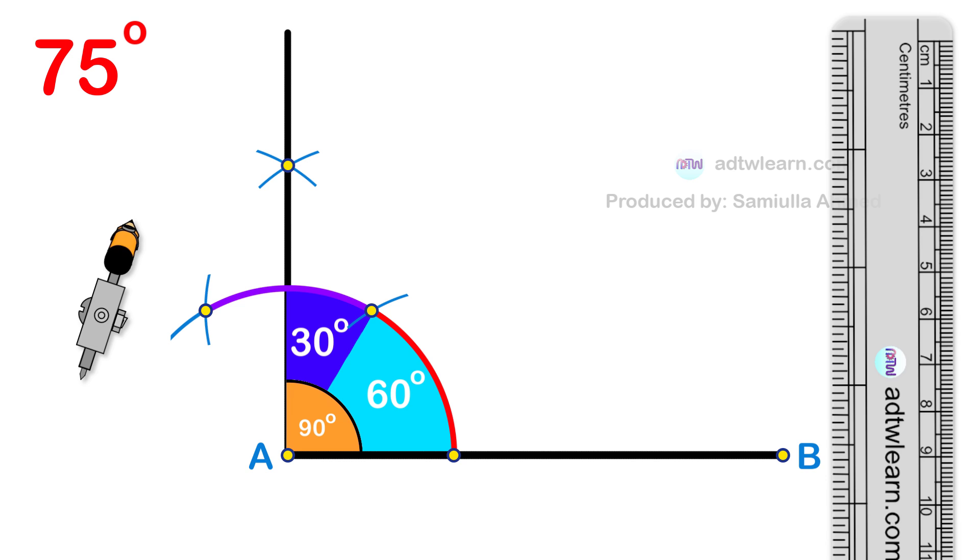Half of this will be 30 degrees. Therefore this total angle is 90 degrees, but we need 75 degrees. To get 75 degrees, we need to divide this 30 degree arc into two. Take a compass and using these points as centers, cut arcs as shown.